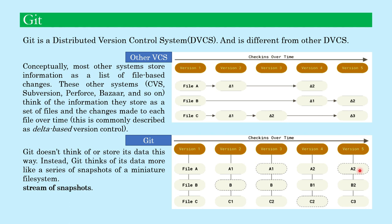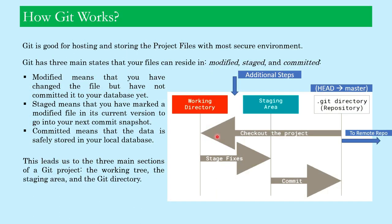Whenever we make changes to the project permanently, Git stores those changes as a snapshot of the project. The permanent change to the project is done by the commit and the commit message, which we will see throughout the course. Git is good for hosting and storing project files in the most secure environment. It has three main states that our files can reside in: modified, staged, and committed.